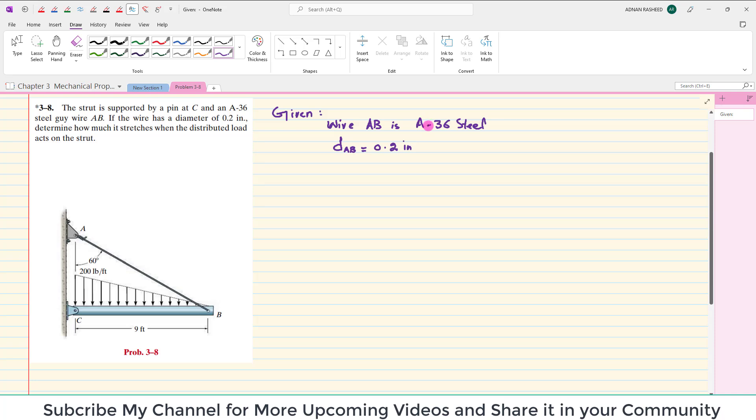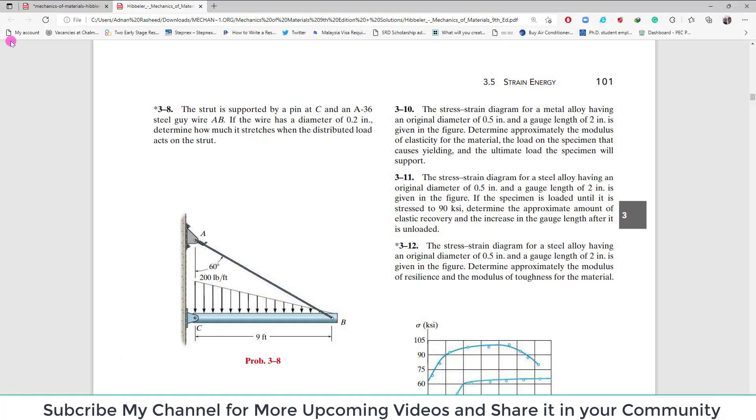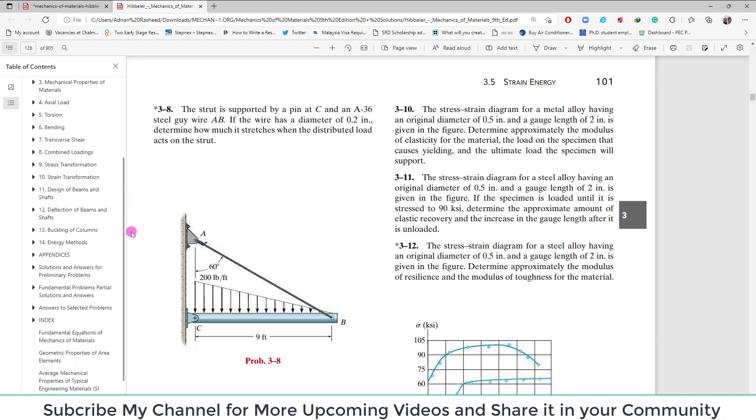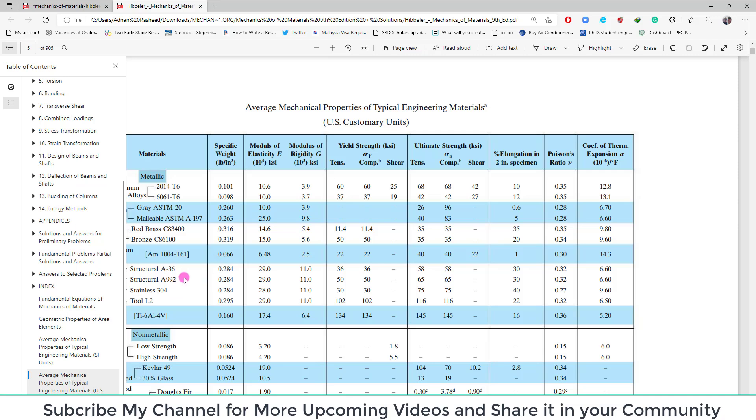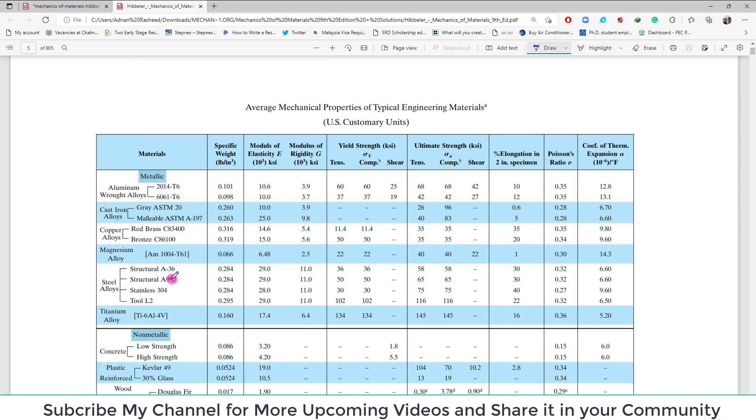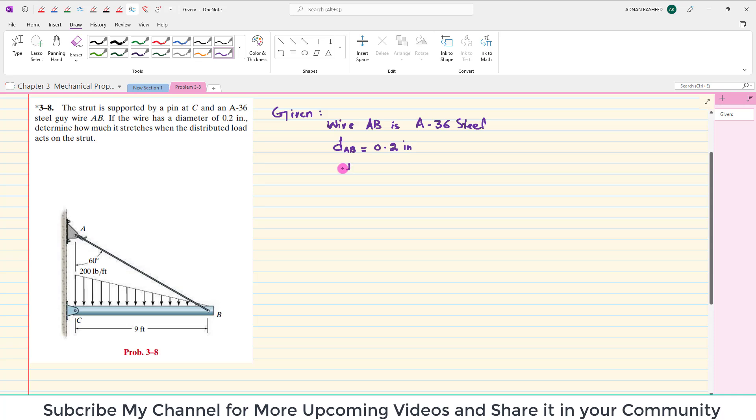If A36 is given, we have to check its property from the book. This is the book. At the end of the book, you have the section about average mechanical property, typical US customary units. You can search A36. Its modulus of elasticity E is 29 into 10 to the power 3 KSI and its yield strength is 36 KSI. We will pick these two values because we will need them in our problem.